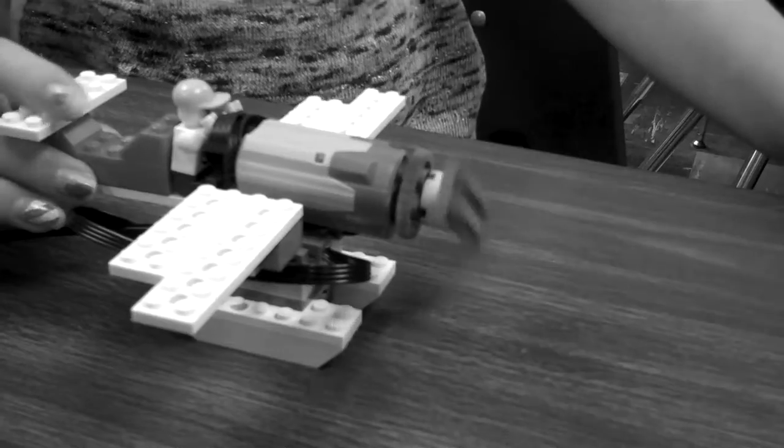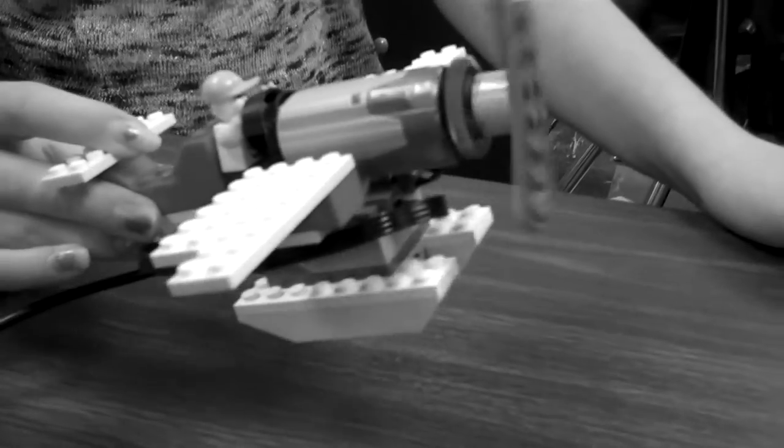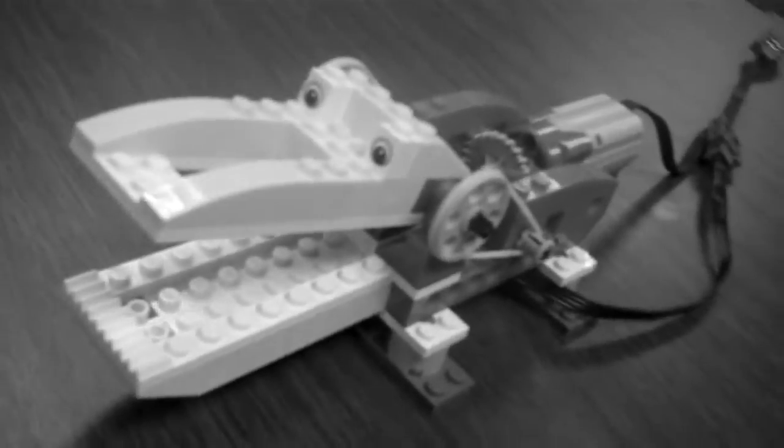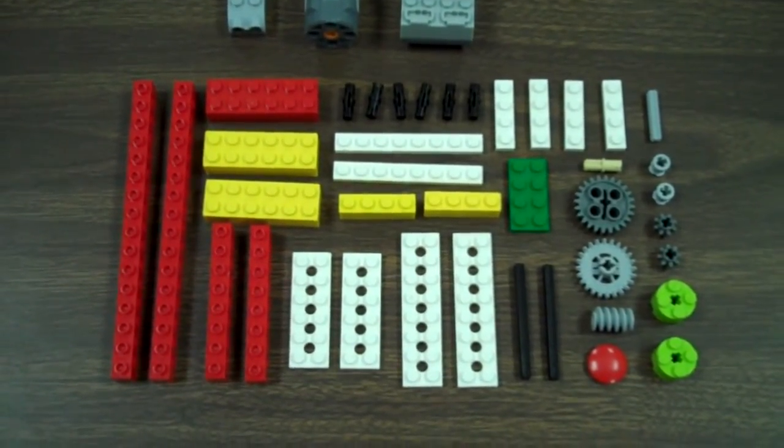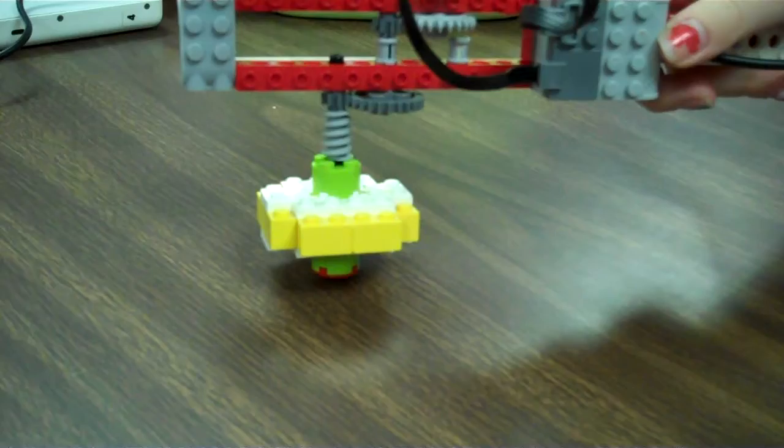Previously on our WeDo Robotics tutorials, we showed you the airplane and alligator. Now it's time for something new. These are all the pieces you'll need to build this model. Don't worry, you don't have to memorize all these pieces.